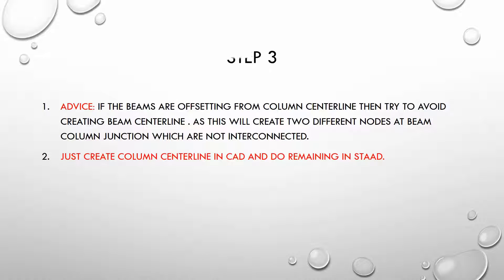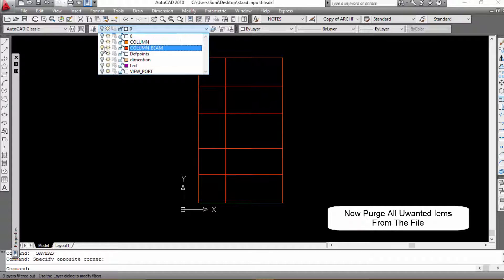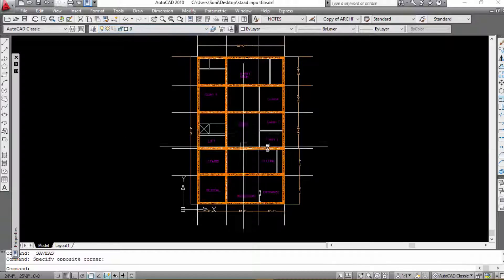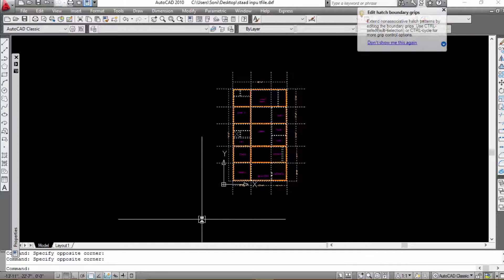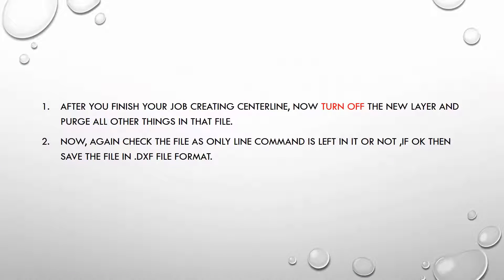Step 3: It is good advice that if our beams are offset from the columns, generally at the periphery, don't draw the centerline of the beam. Only draw the centerline diagram of the columns. Step 4: After purging all the files, save the file in DXF format.